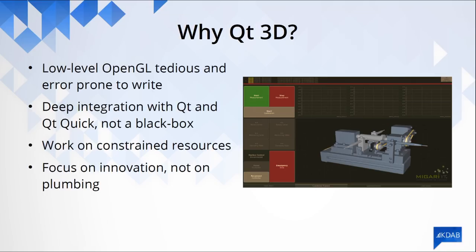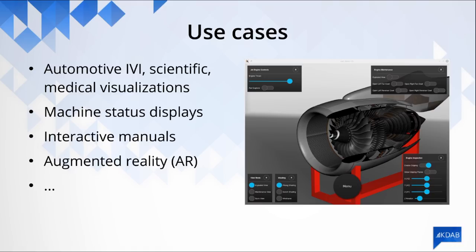Let me give you a couple of use cases — places where we are using Qt3D. We have been using Qt3D to build scientific or medical visualizations. That's pretty obvious since typically these visualizations have some 3D component or 3D structure that you need to visualize and interact with. We have also been using Qt3D in automotive, in the infotainment systems that you can find in any modern car. And also, we have been using Qt3D for machine status displays or interactive manuals.